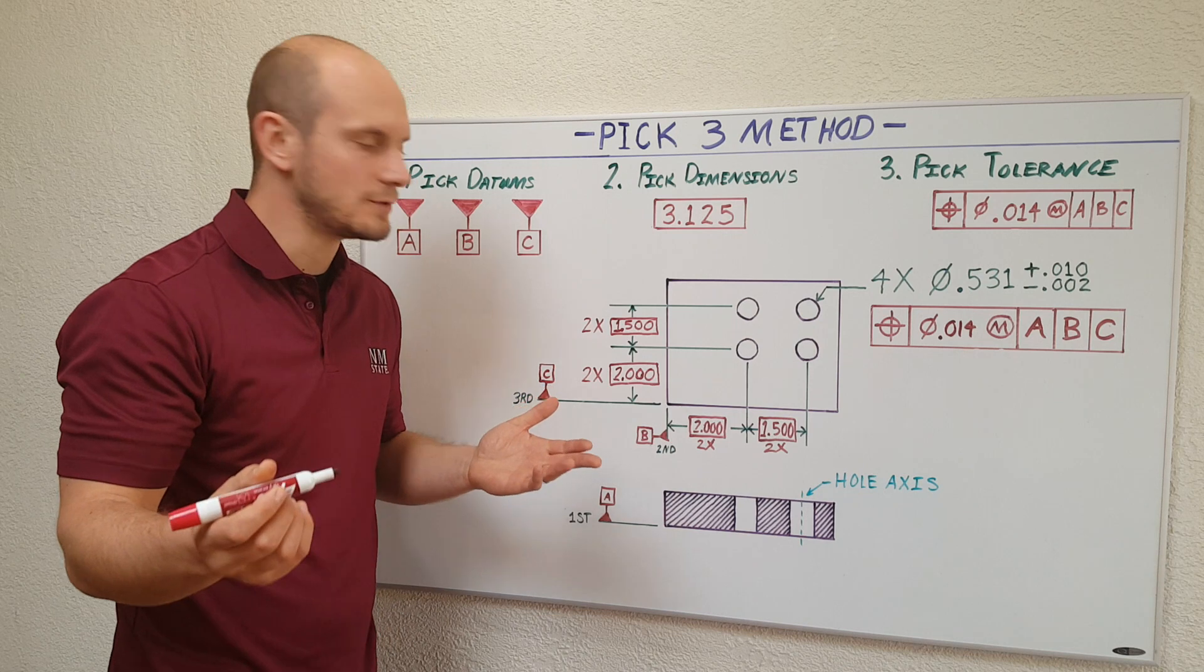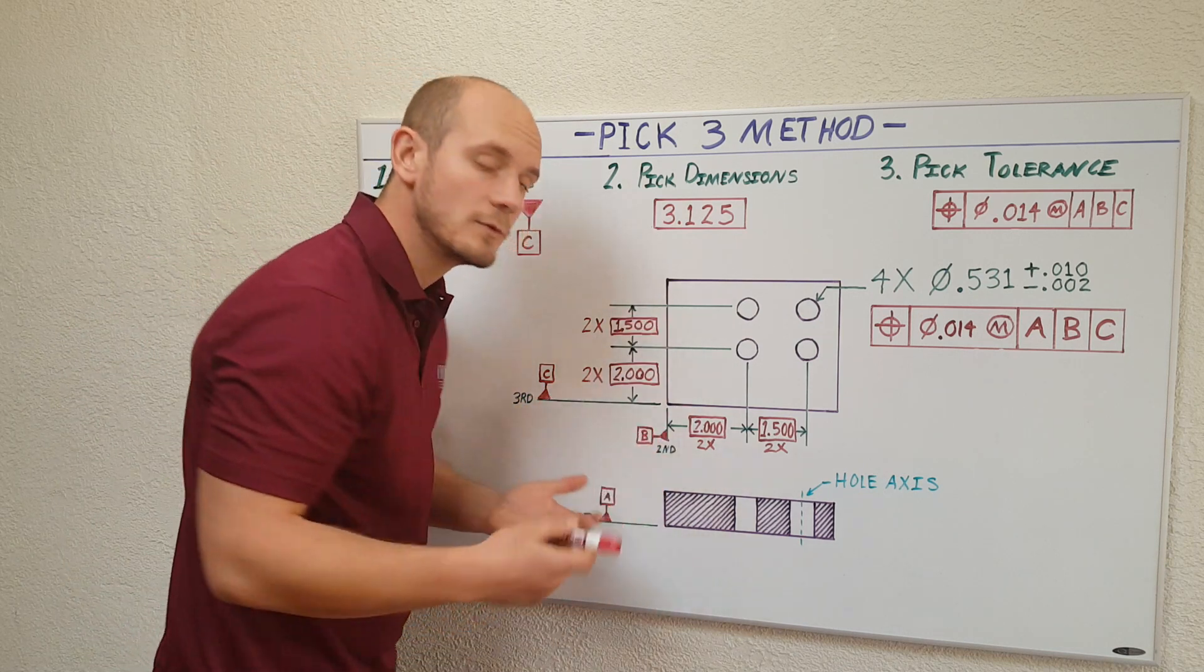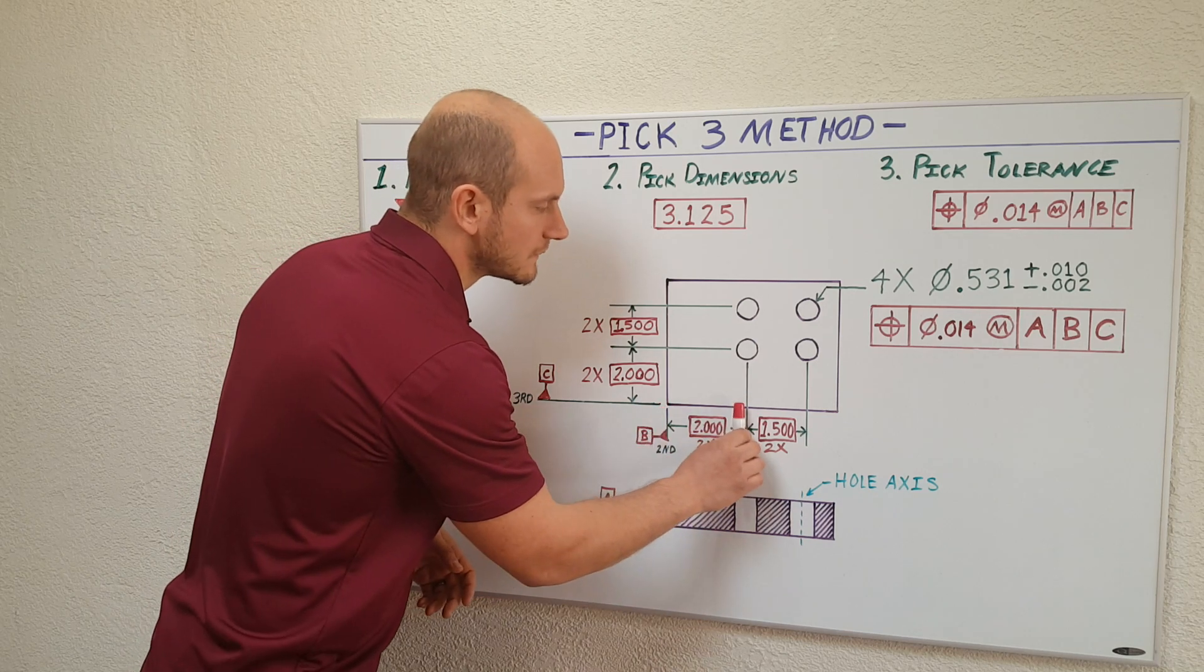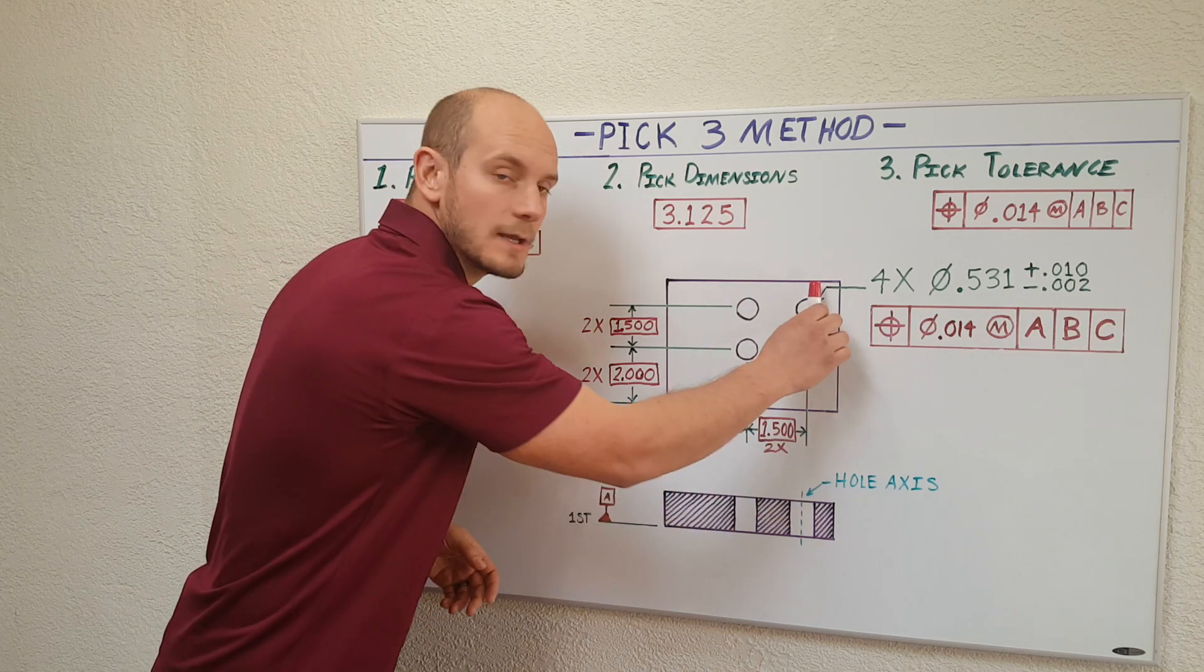The second datum I'm going to choose, this surface here. What I'm doing is telling the machinist, I want you to start from the surface and move across to locate each set of holes in the pattern.